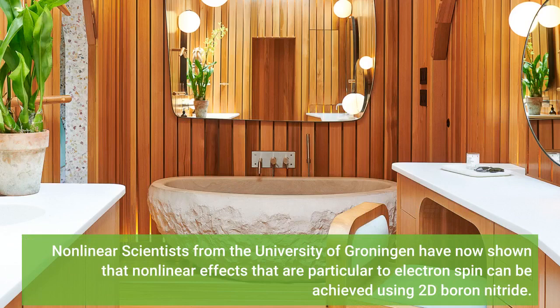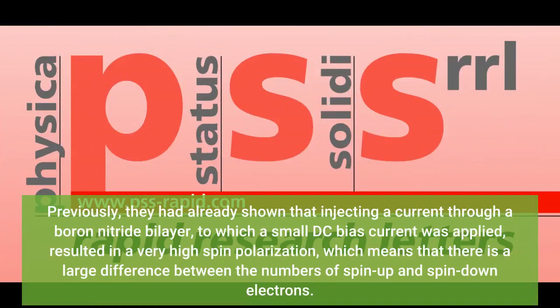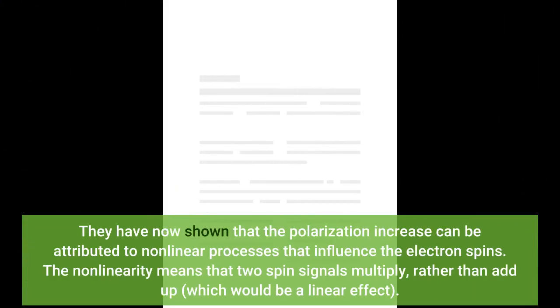Scientists from the University of Groningen have now shown that nonlinear effects particular to electron spin can be achieved using 2D boron nitride. Previously, they had already shown that injecting a current through a boron nitride bilayer, to which a small DC bias current was applied, resulted in very high spin polarization, meaning a large difference between the numbers of spin-up and spin-down electrons. They have now shown that the polarization increase can be attributed to nonlinear processes that influence the electron spins. The nonlinearity means that two spin signals multiply rather than add up, which would be a linear effect.